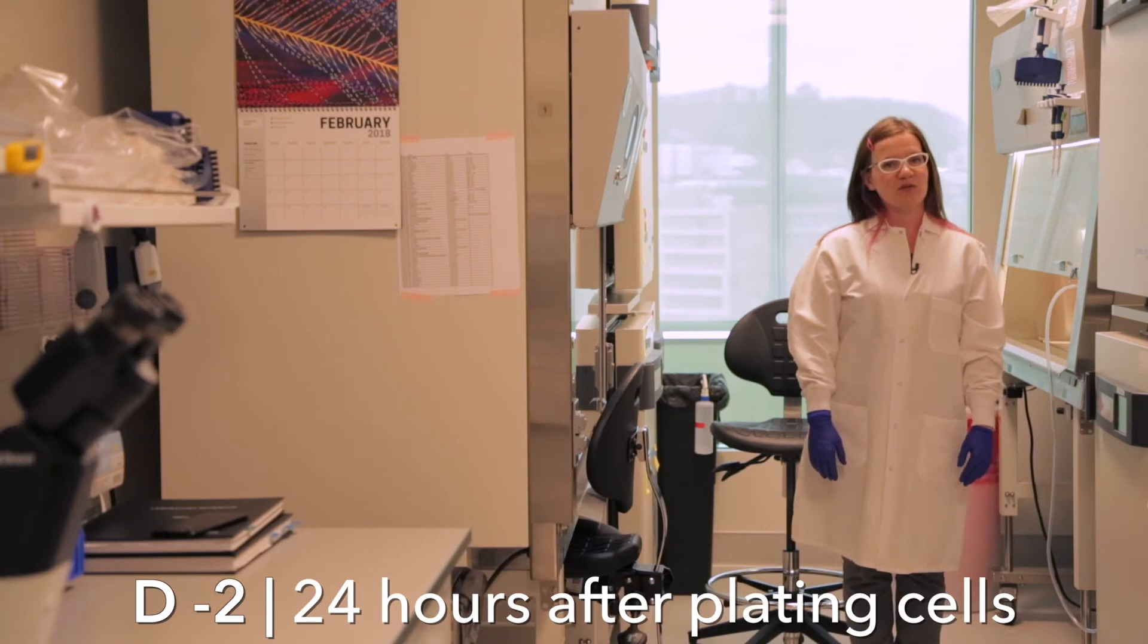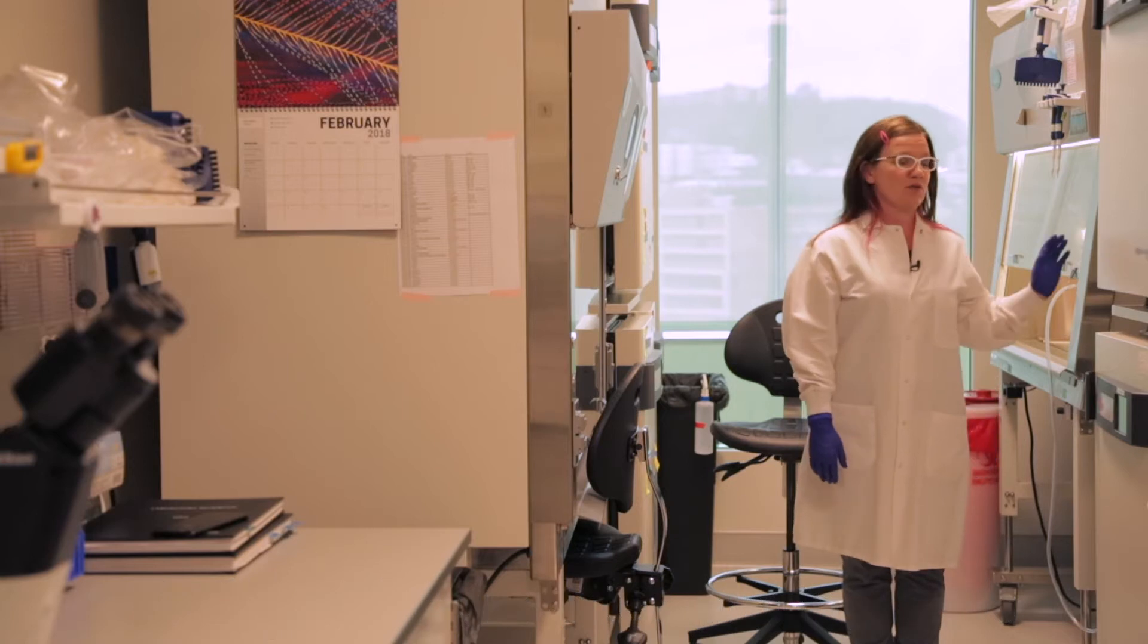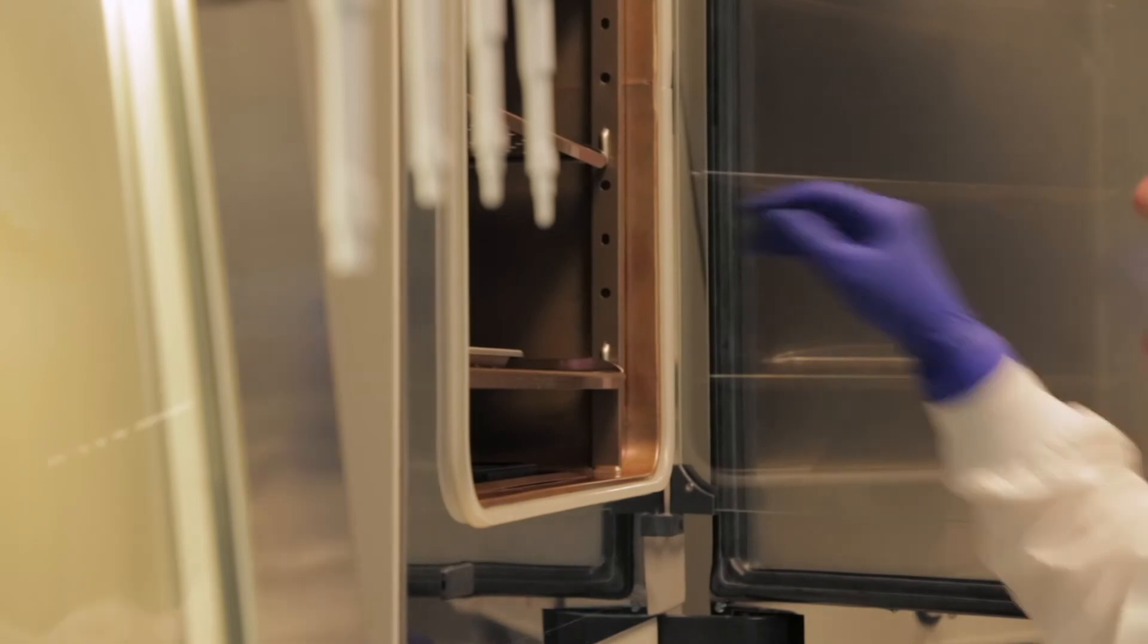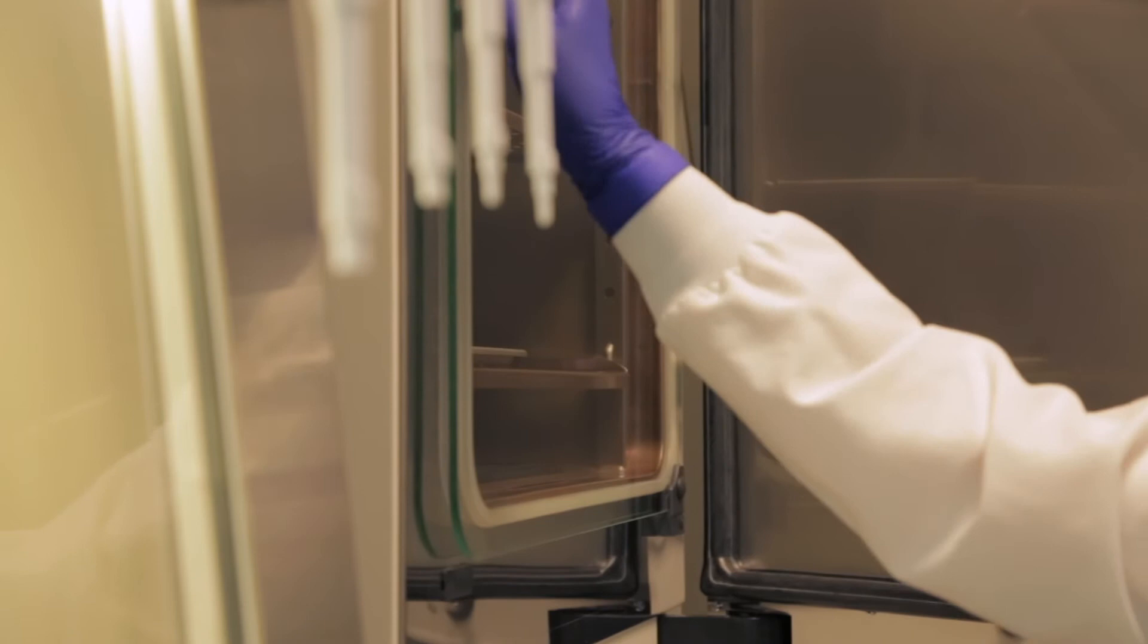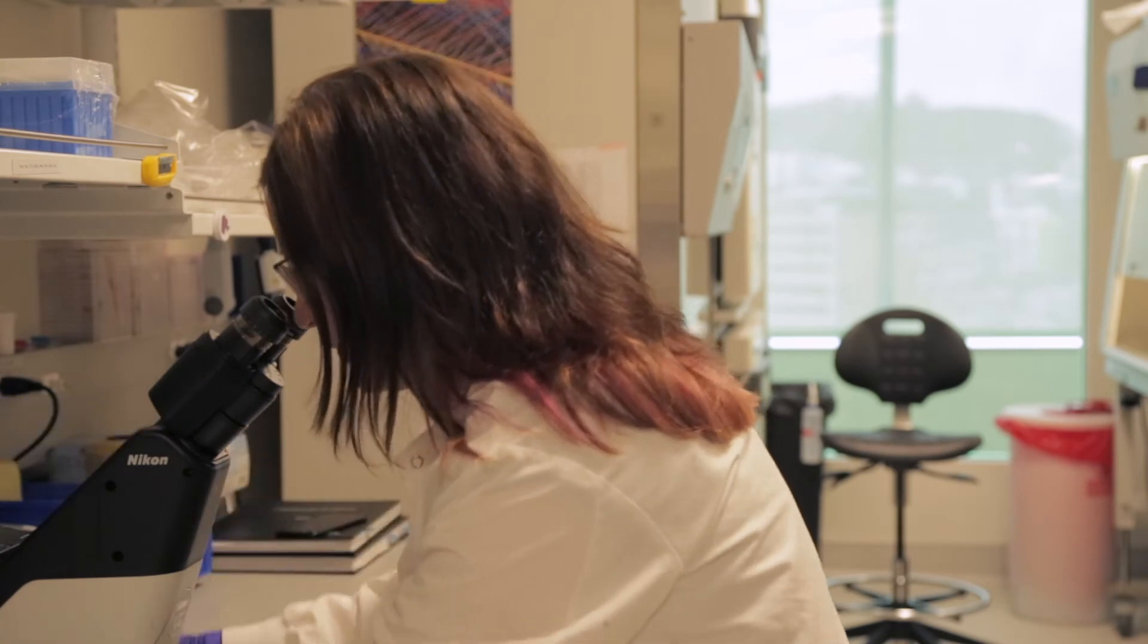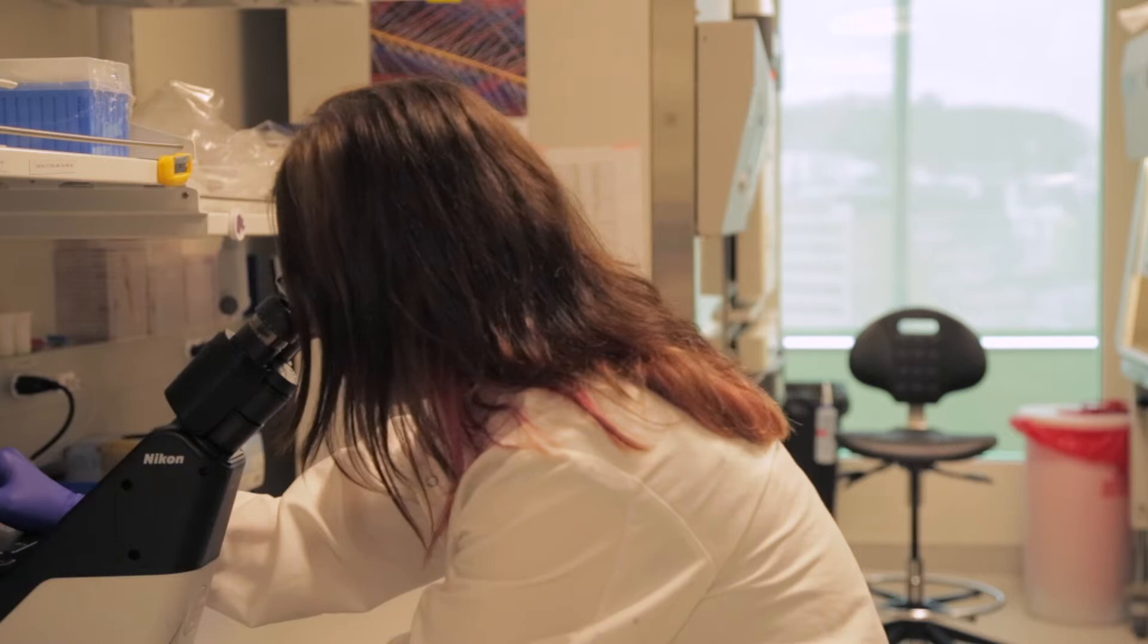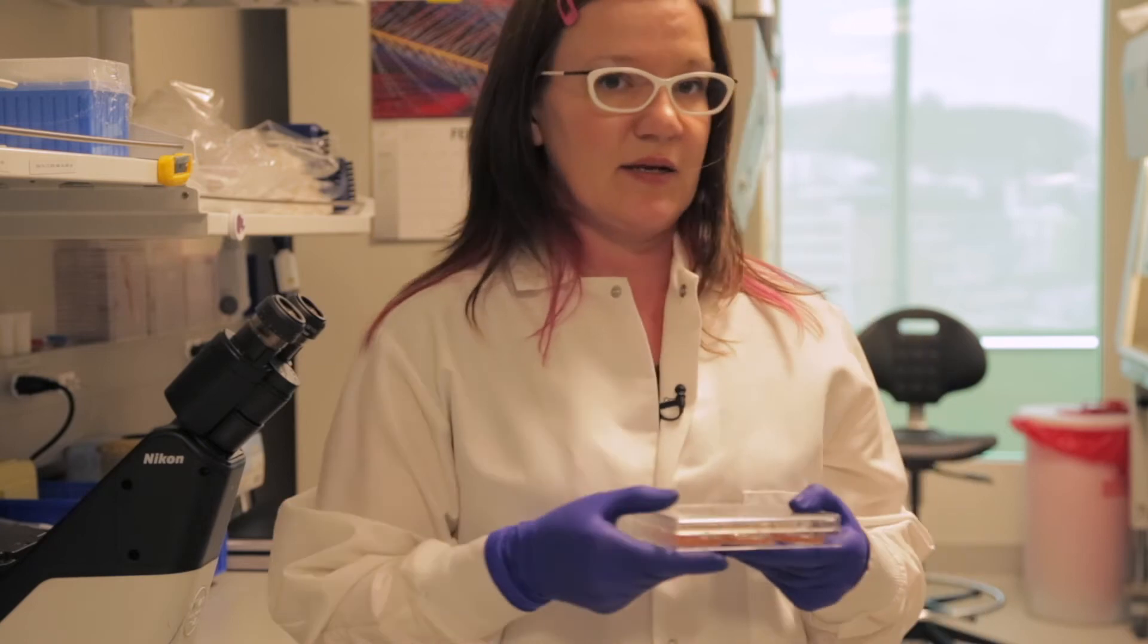So we just put the cells in the incubator. We're going to leave them undisturbed and check them tomorrow. Yesterday we plated the cells for differentiation, and in our protocol that's denoted as day minus three. Let's get them out of the incubator and look at the morphology. These look good. What I'm looking for is a nice, even distribution of the cells around the well and not very much cell death.